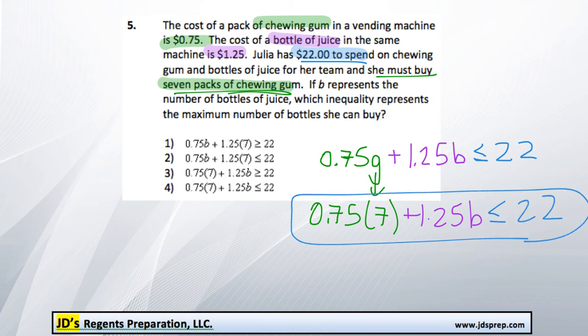So that is how we'd represent this situation as an inequality, and we can see that is option number 4. I hope that was helpful. Thanks for visiting JD's Regents Preparation.